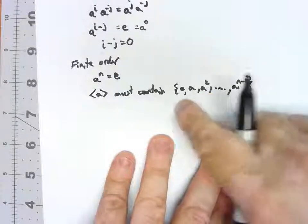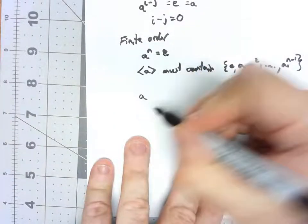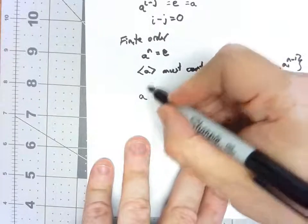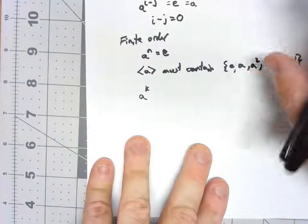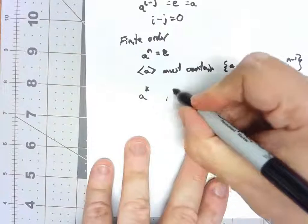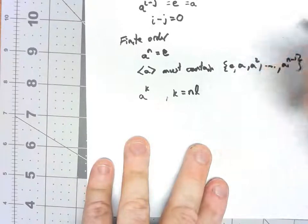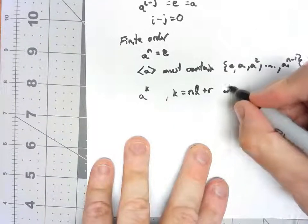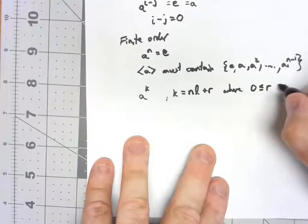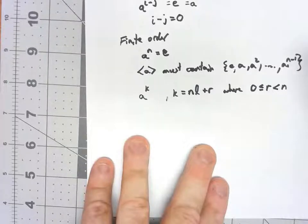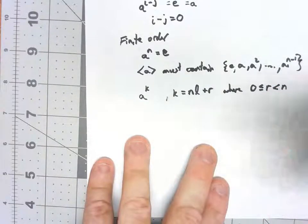Now what we really need to show is that there's nothing else except for those elements. So let's say I have A to some power, let's call it K. Basically by doing long division, K has to be equal to some multiple of N plus a remainder, where that remainder is between zero and strictly less than N.